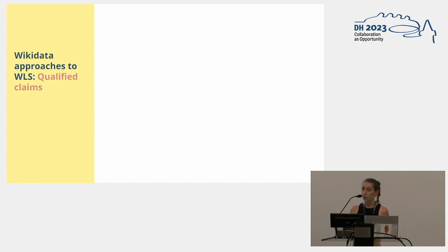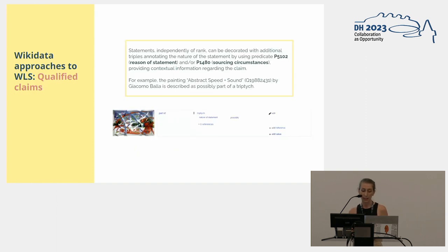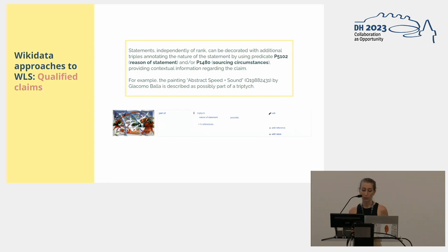The second approach we analyzed is qualified claims. As mentioned, Wikidata presents qualifiers — additional triples that decorate a claim by annotating several pieces of additional information. We analyzed the nature of the statement and the existing circumstances of each statement. For example, this painting, Abstract Speed and Sound by Giacomo Balla, has been described as possibly being part of a triptych, meaning even this claim can be categorized as a weaker logical status claim.